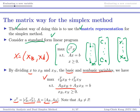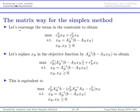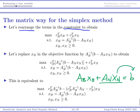Once I divide everything, my constraints become AB*xB + AN*xN = b, which is a linear combination of columns on the left-hand side and b on the right. My objective function becomes cB-transpose*xB + cN-transpose*xN. I can rearrange the constraint: since AB*xB + AN*xN = b, I move the AN*xN term to the right-hand side to get AB*xB = b - AN*xN.